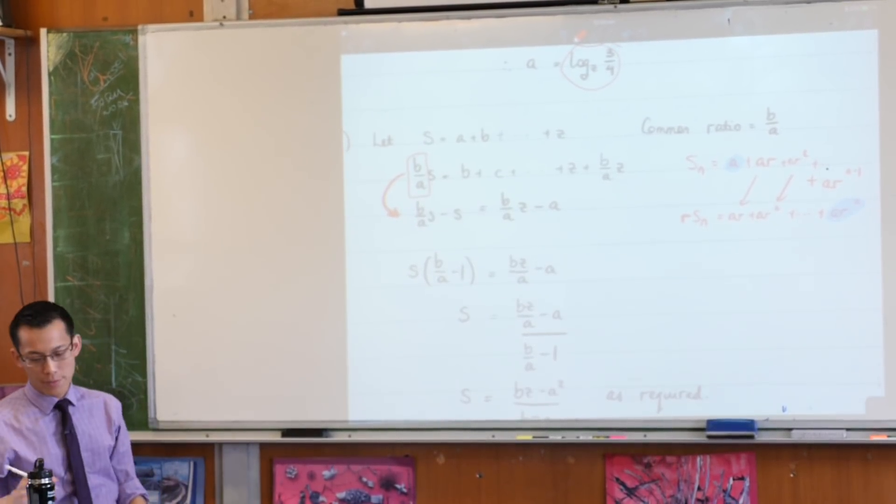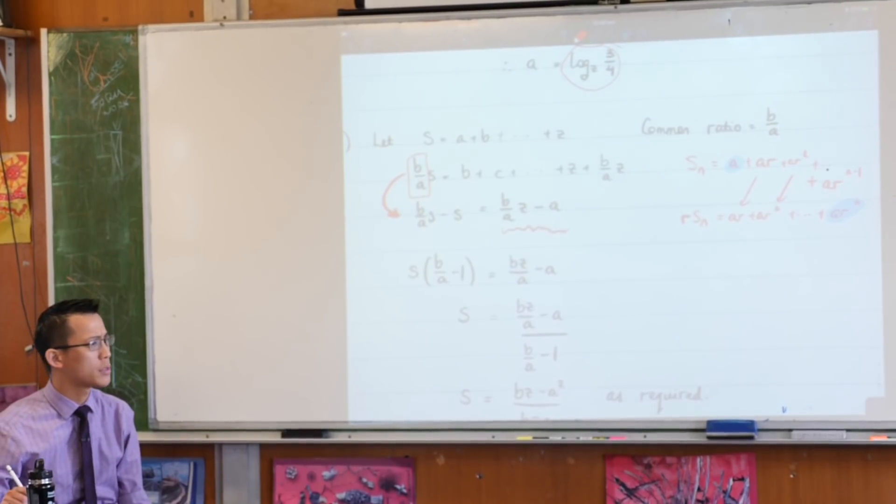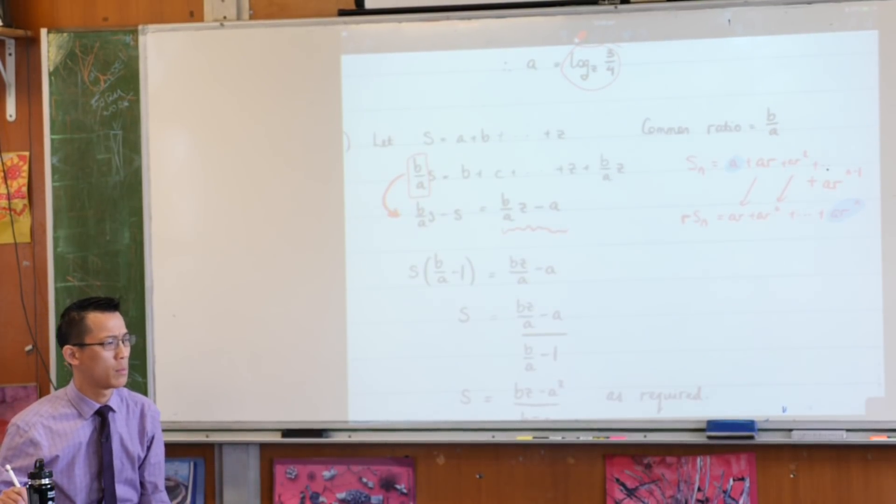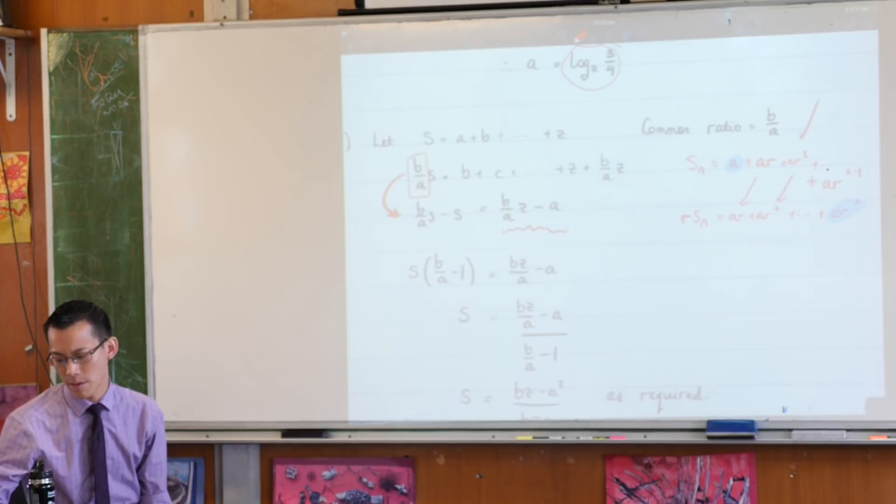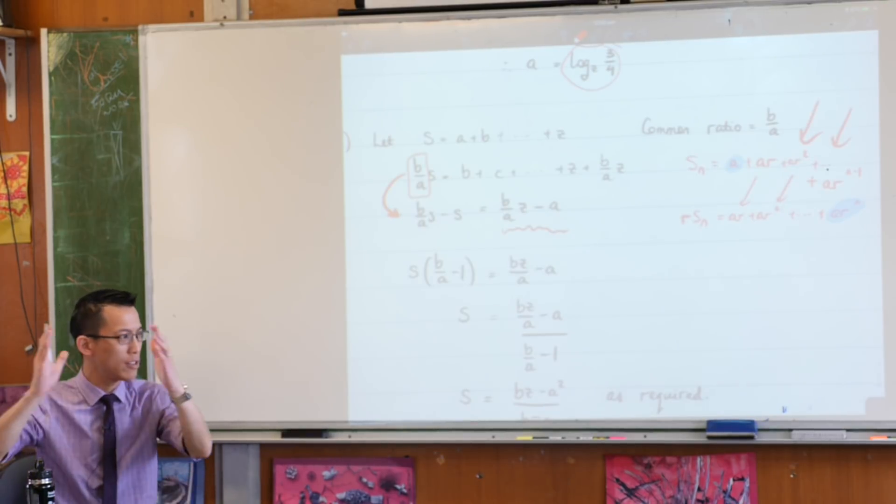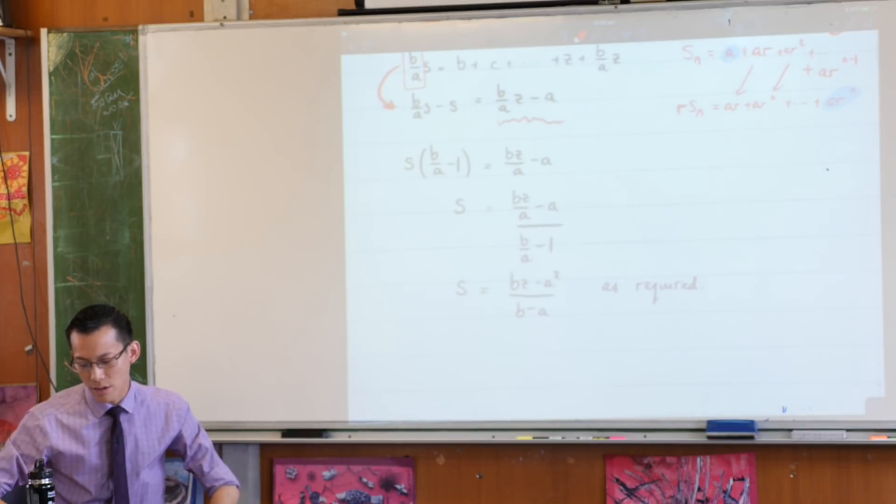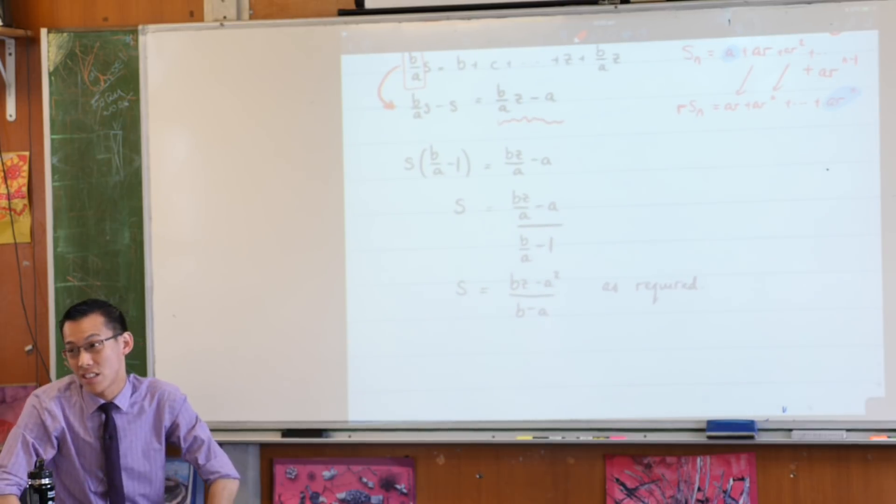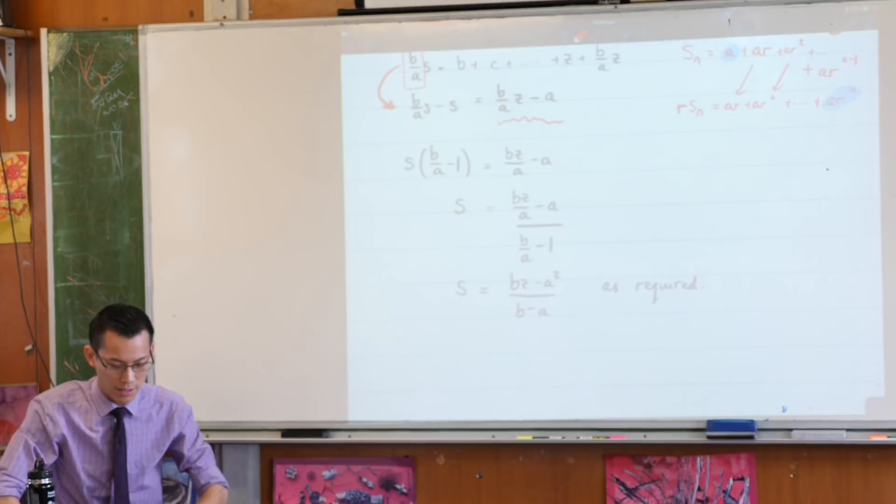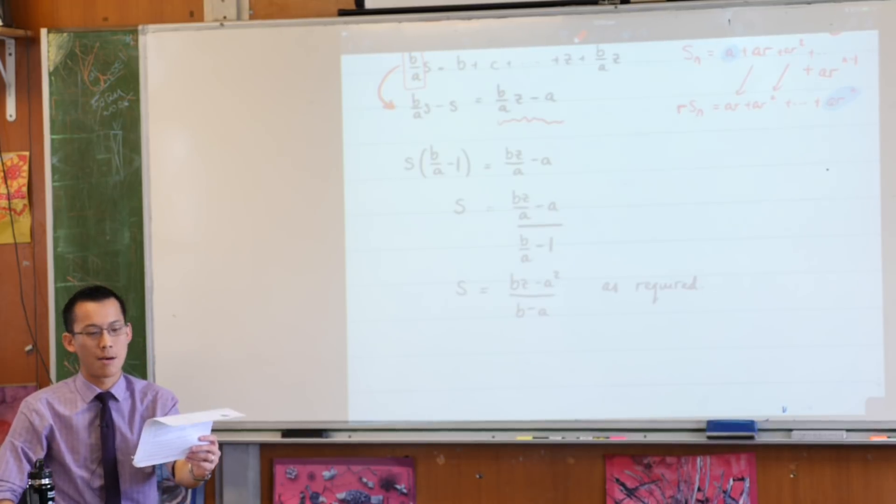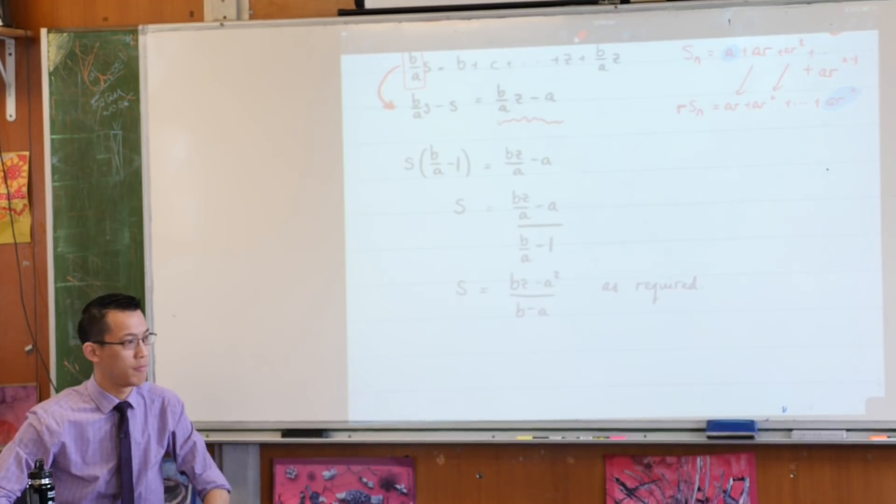And how come I'm left with just two terms here? Do you remember why I'm just left with two terms? What happened to all the rest of them? Yeah, the same thing that happened on this side. All the intermediary terms disappeared. From there, it's just a bit of algebraic dancing around. I just need to make S the subject, because that is the question after all. Show that its sum is, and then there you are.